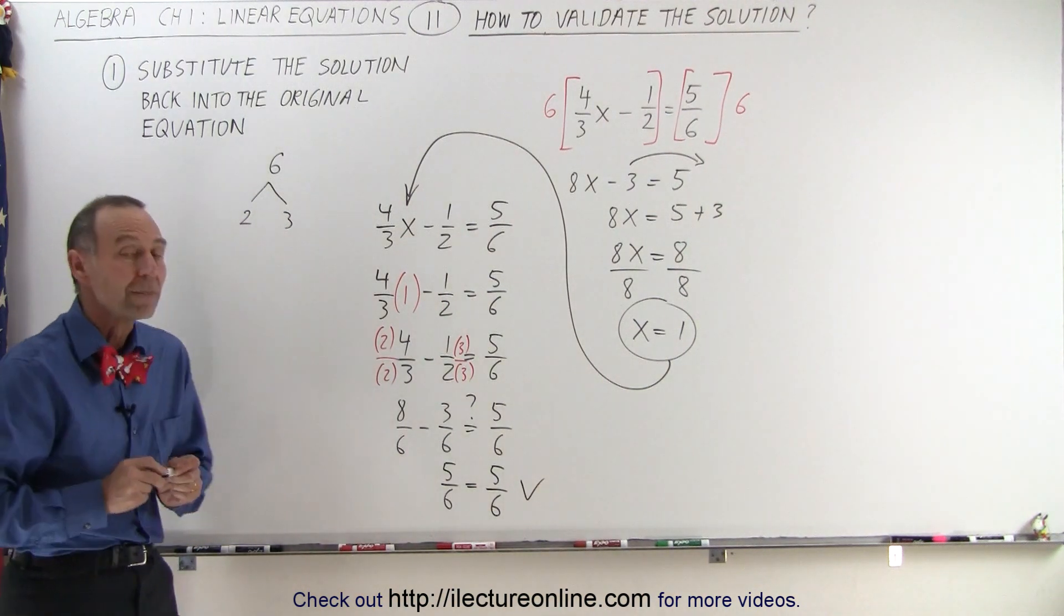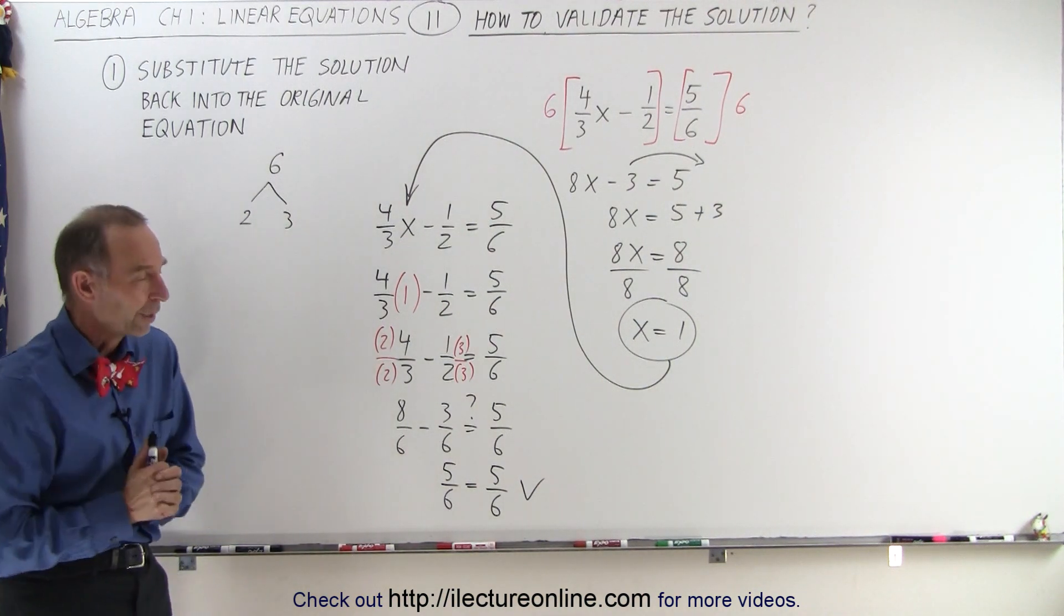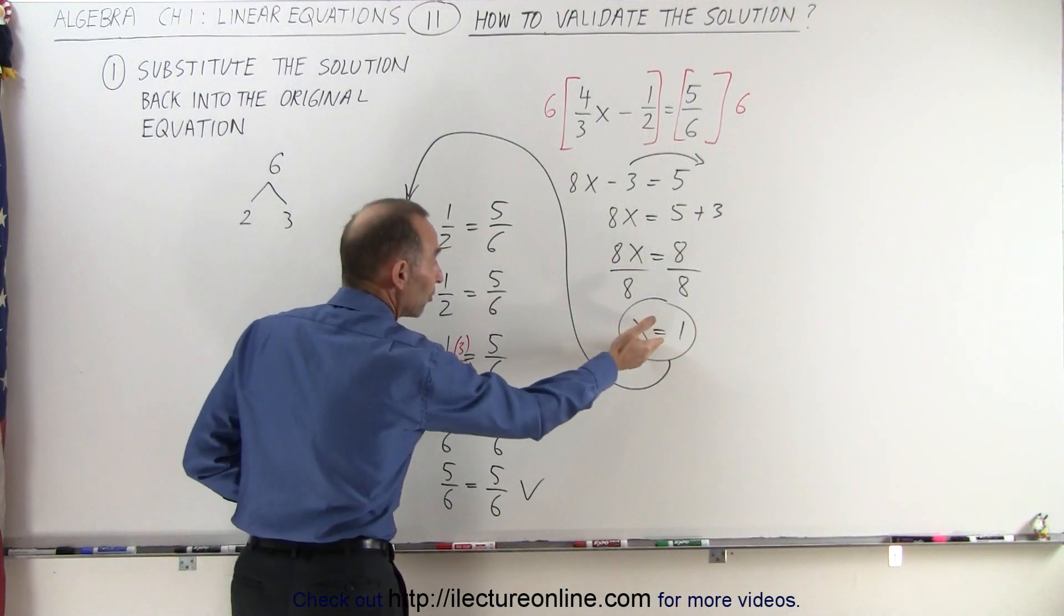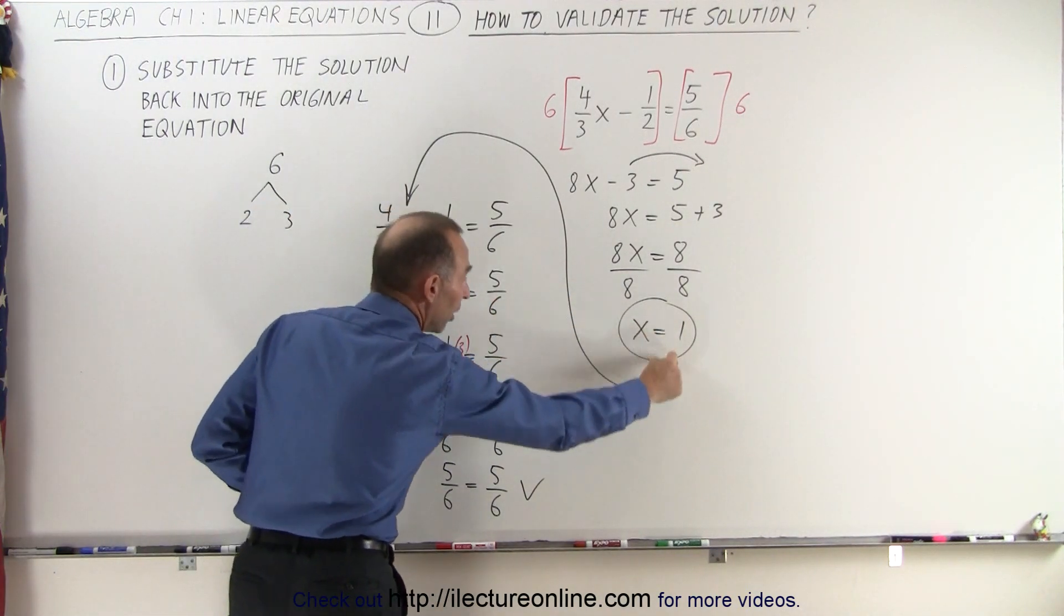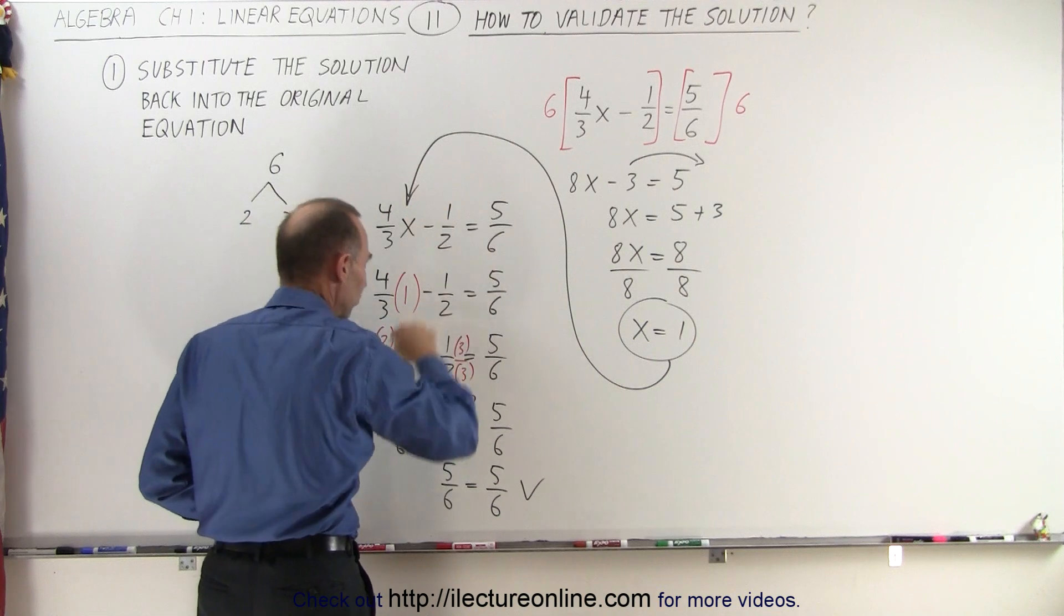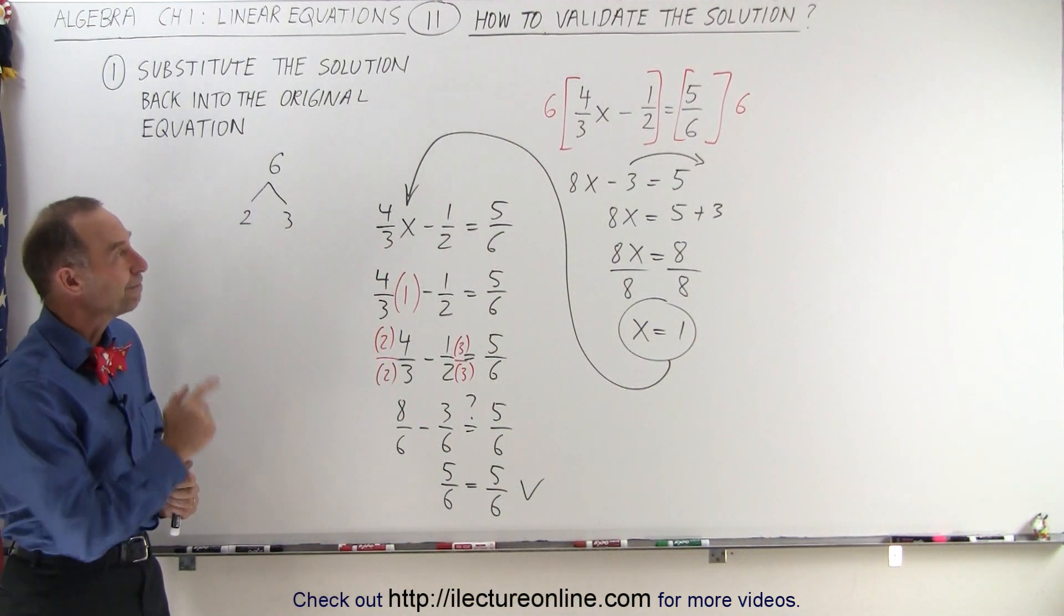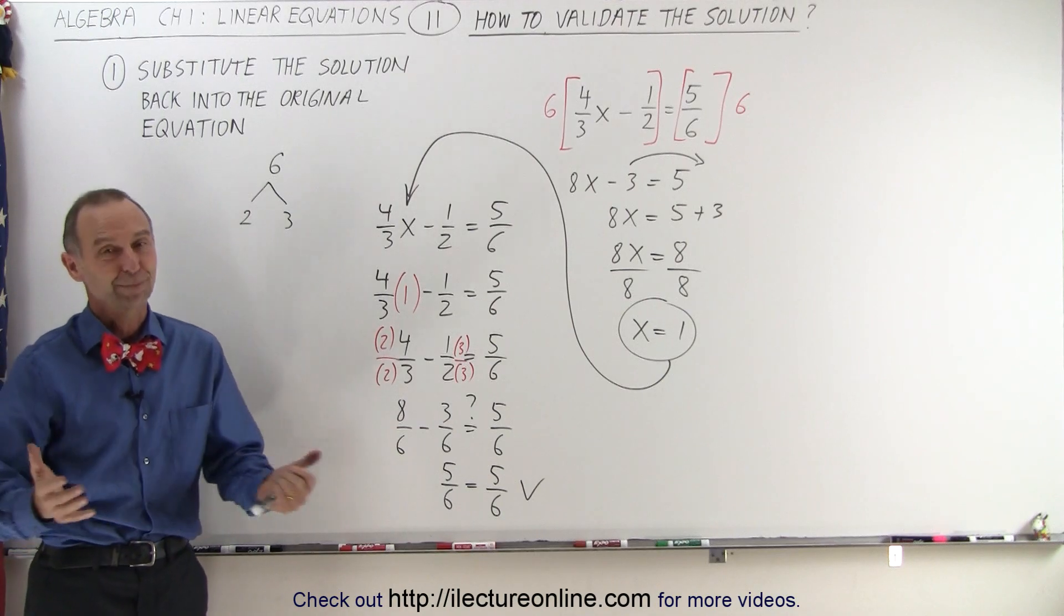Since the two sides are equal, that means the solution I found is the correct solution. So the answer is, if you find the solution to your equation and you wonder if you got the correct solution, plug that answer back in the original equation, work it out, make sure that the two sides are equal, and then you can say I found the right solution. That's how it's done.